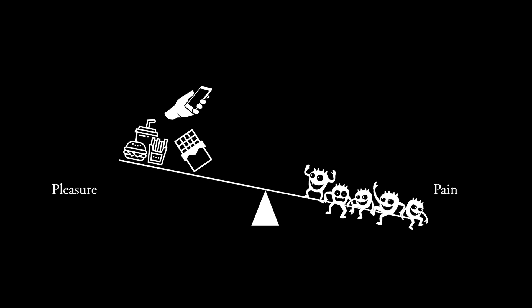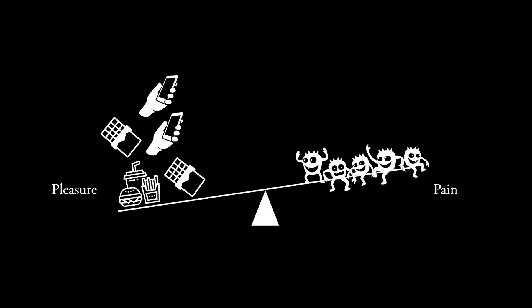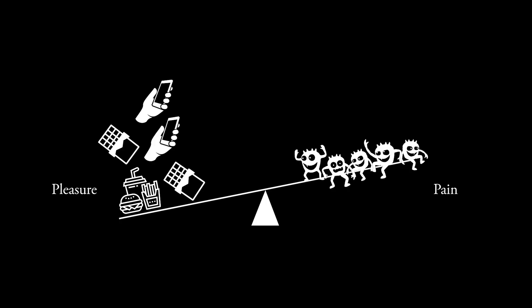Because when you're in this dopamine deficit state, you'll start to feel uncomfortable, and your brain will crave more dopamine to fix it. So what most people do is indulge in more pleasurable activities, like eating more chocolate, or continue to scroll on your phone. And that pushes the scale even more towards pleasure.